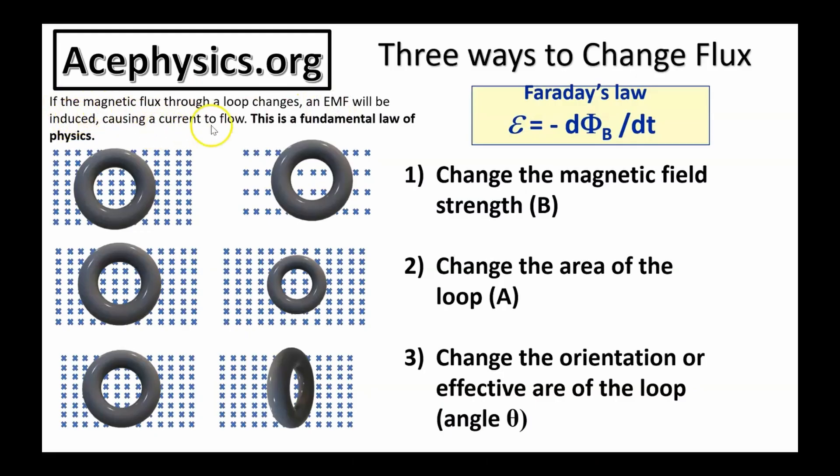If the magnetic flux through a loop changes, an EMF will be induced, causing a current to flow. This is a fundamental law of physics. This is known as Faraday's Law.